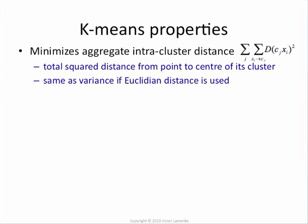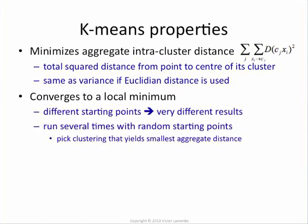You should be able to convince yourself that with each step of the algorithm, that distance gets smaller and smaller. Another way to interpret it: if the distance you're using is Euclidean, then this is exactly the variance of points around their centroid. The total aggregate variance in the system is what you're minimizing.